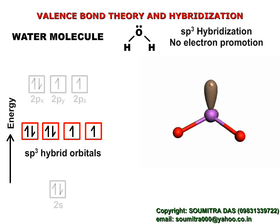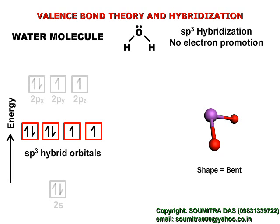The sp³ hybrid orbitals containing lone pairs do not contribute to the shape of the molecule. Therefore the shape is bent. Note that the electron promotion step was not required here.